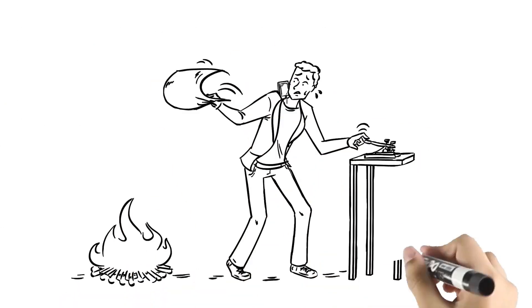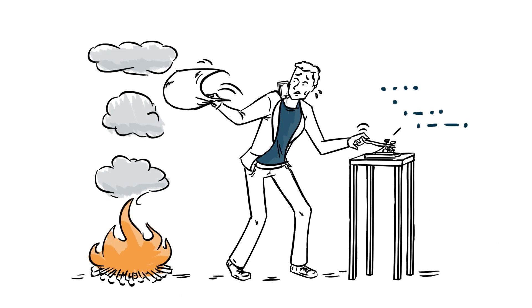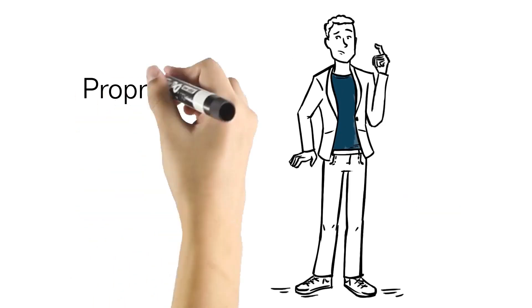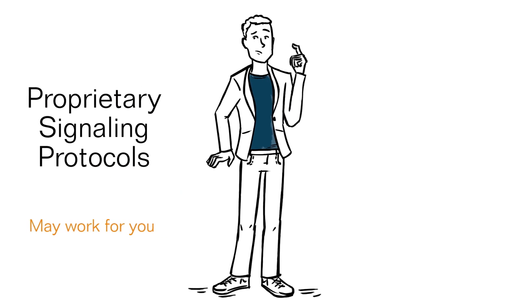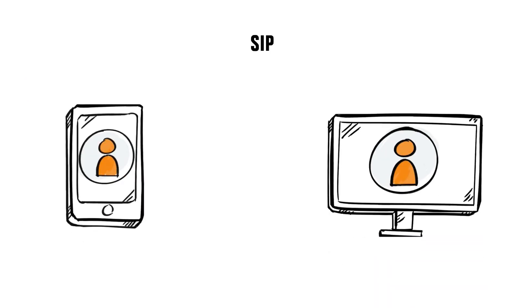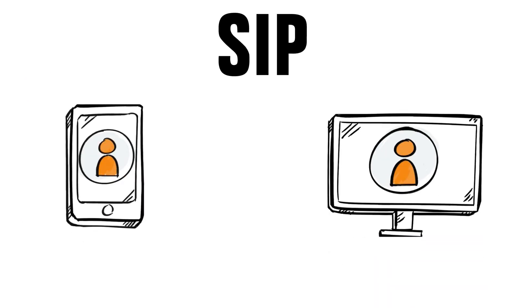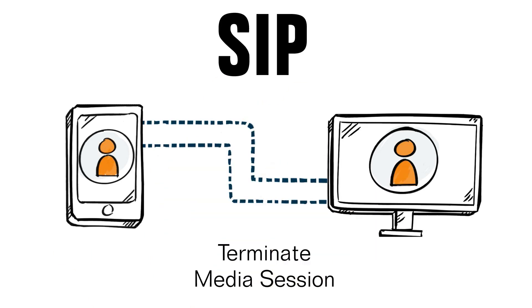Your app can find peers using smoke signals or Morse code, but we don't recommend it. There are proprietary signaling protocols that may work for you, but why not use SIP, a proven open standard? Commonly leveraged in Voice over IP, SIP is actually designed for creating, modifying, and terminating media sessions of all kinds between peers.